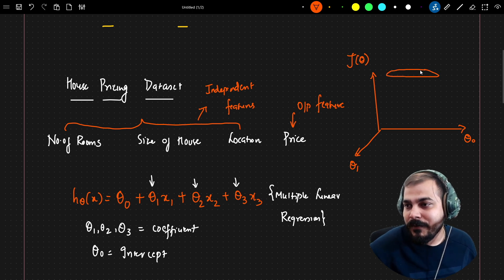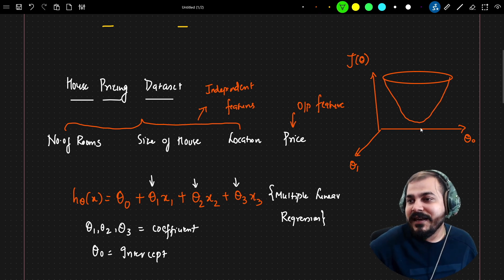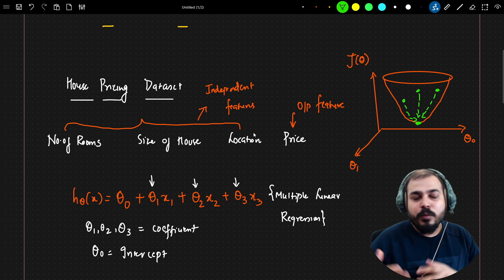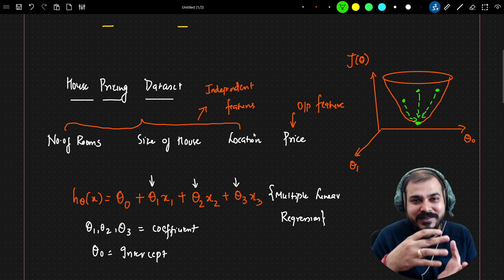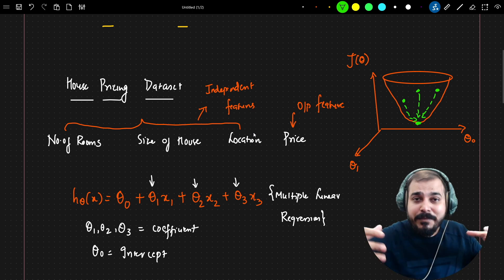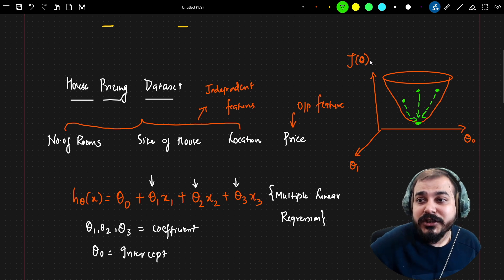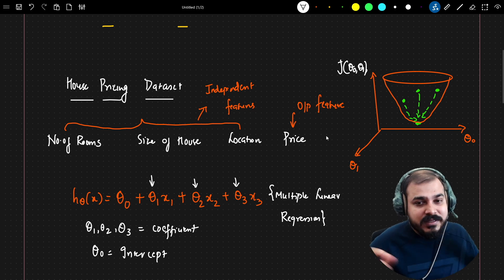The gradient descent curve looks like an inverted mountain, with J(θ) on the vertical axis and θ₀, θ₁ on the horizontal axes. θ₀ can start from one point, θ₁ from another, and θ₂ or θ₃ from yet another — but everybody's aim is to converge to the global minima. We keep changing θ₀, θ₁, θ₂, θ₃ to reduce the cost function J(θ₀, θ₁).